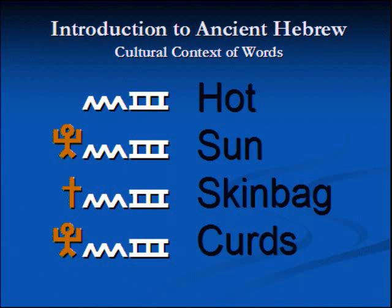Starting at the top, we've got the word 'cham.' It's also the name of one of Noah's sons — cham, or Ham — and it means hot. Ham or cham probably had a pretty bad temper. The second one is 'chemah,' and that means sun. We can see a pretty good connection there: the sun, hot.